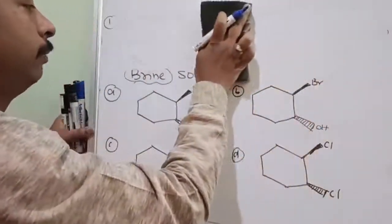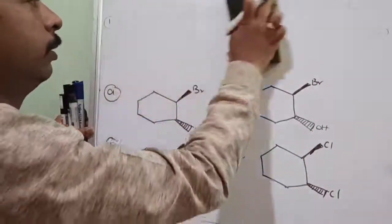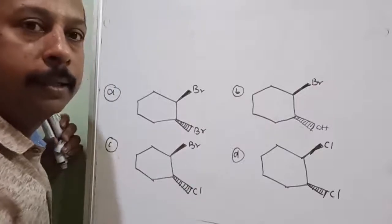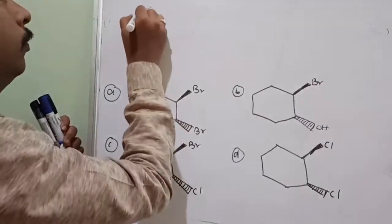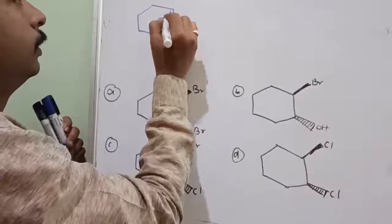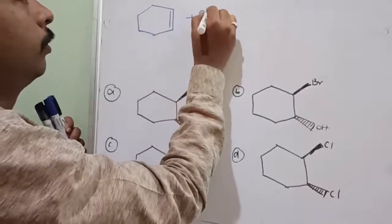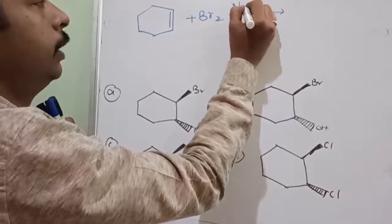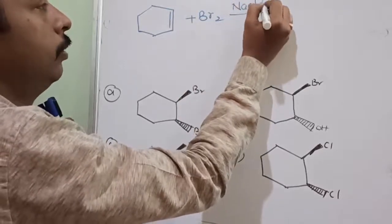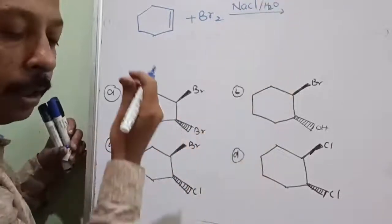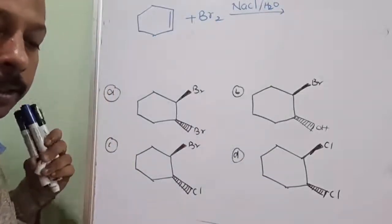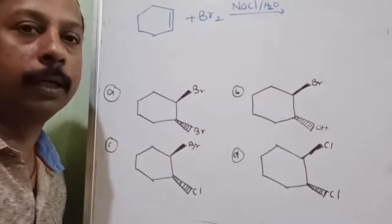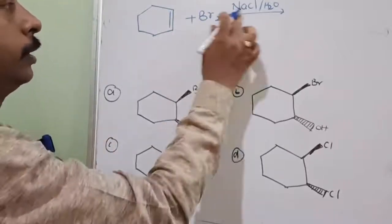There can be more than one type of product possible. So what is the question? I am converting the sentence into question form. What I have to react? React the cyclohexene. With what? Bromine in the presence of brine. Brine is NaCl aqueous solution — aqueous solution of NaCl is called brine. Normally it is 10% concentration. So this is the reaction — what are the possible products?